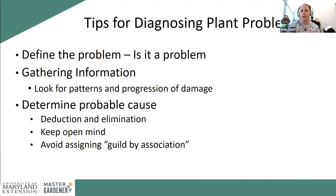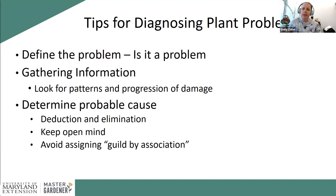Here are some tips for diagnosing plant problems — this process works for vegetable production, fruits, and landscape plants alike. First, define your problem: is a small amount of feeding on one leaf of a knee-high plant really a problem? If your plants are smaller than a Coke can, that feeding could be an issue, especially on major leaves. But once your plant is knee-high or taller, plants can normally recuperate from feeding damage.